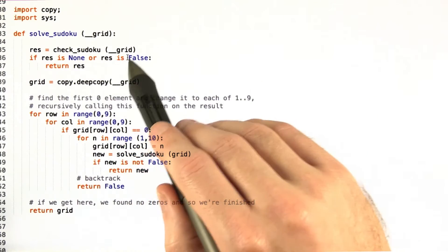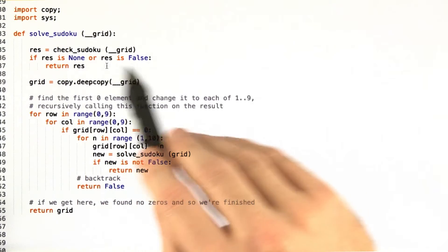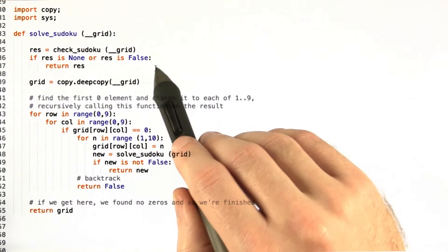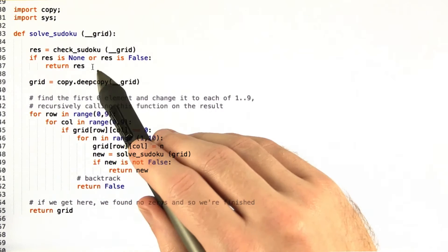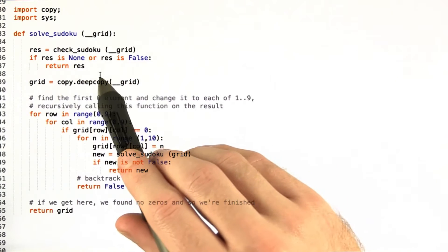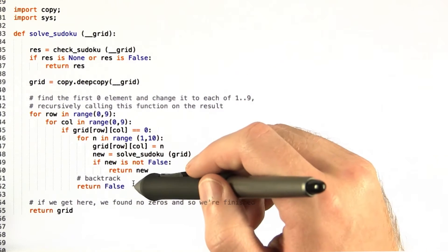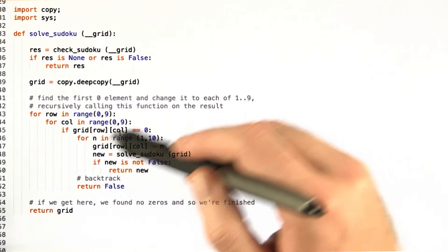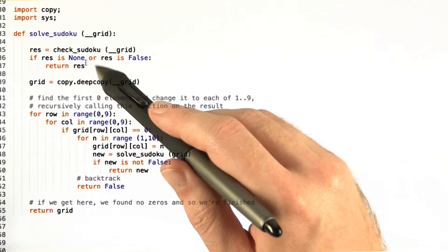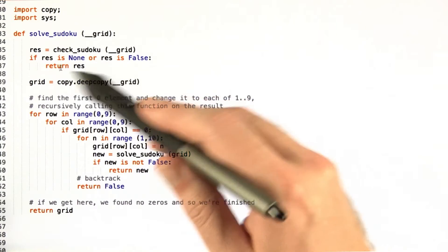First we check the grid with the check sudoku and if check sudoku returns none or false, we return the result. You could also assert here. I wanted to be able to continue on for testing purposes so I just returned the result instead of asserting that.